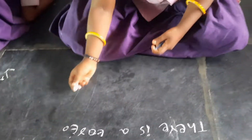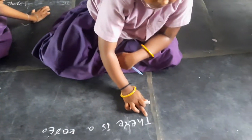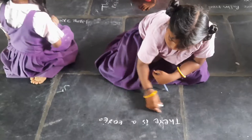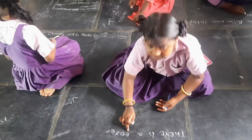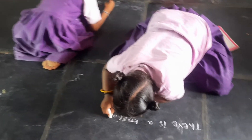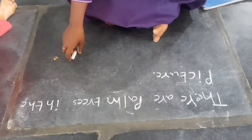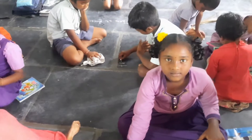Prasanna, say the sentence. Read the sentence. There is... Write the spelling. Tortoise. What do you write, Hema? There are palm trees in the picture. Very good.